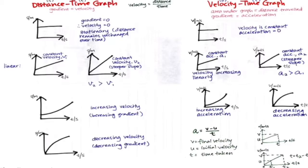For velocity-time graphs: if the gradient is zero, velocity is constant and there is no acceleration. If the gradient is straight and linear, velocity is increasing uniformly and acceleration is constant. If the shape is a U-shape, velocity is increasing increasingly as acceleration is increasing. If the shape is an N-shape, velocity is increasing decreasingly as there is a decrease in acceleration.